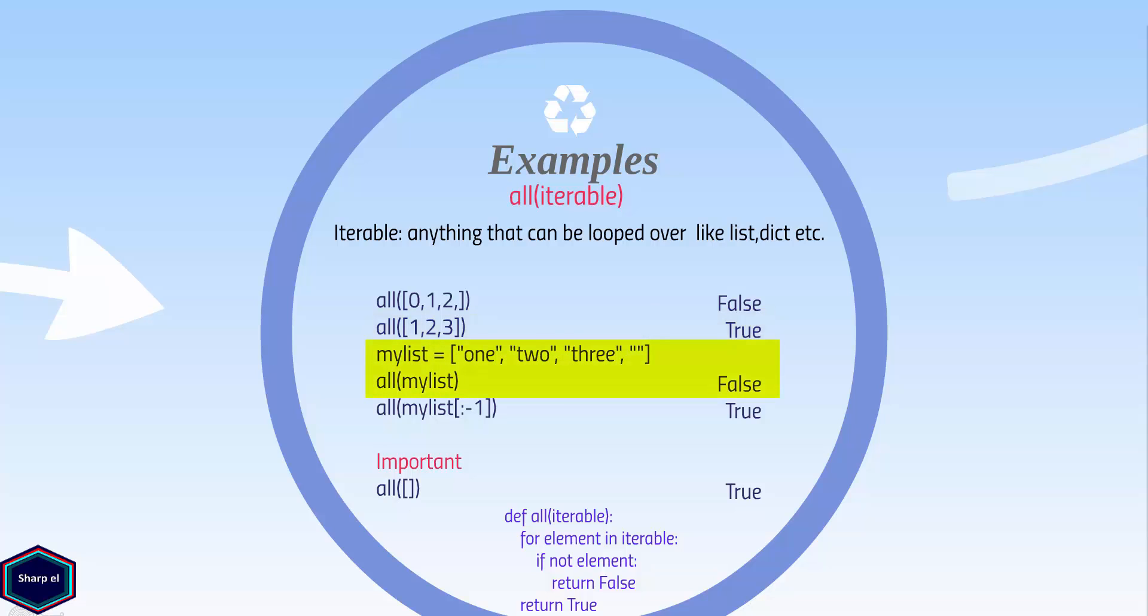Our next example returns false because the last element is false. But what if we remove the last element? We get true as a return value.